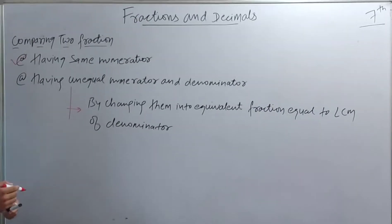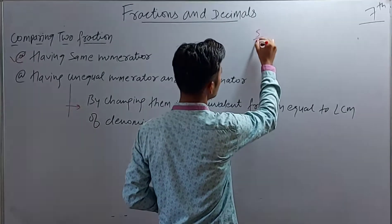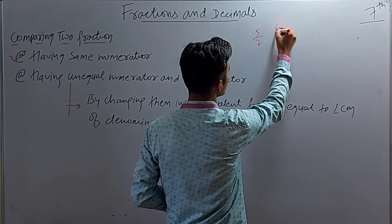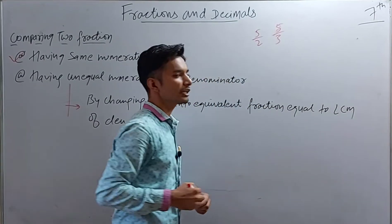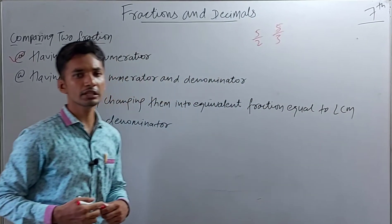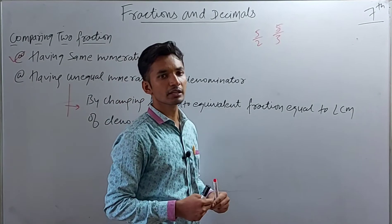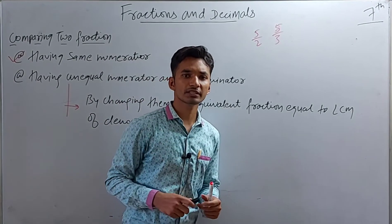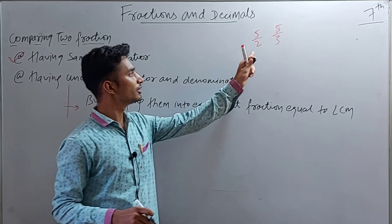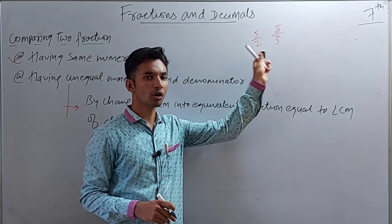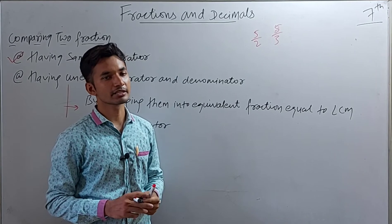That was our complete first method. We had a same number in the numerator and a different number in the denominator — we have already done comparing in that case. How did we know which is the smallest and which is the greatest?